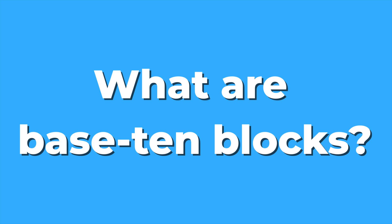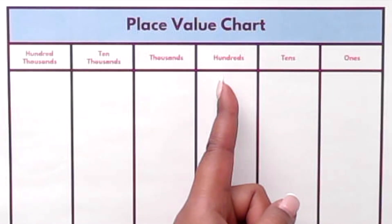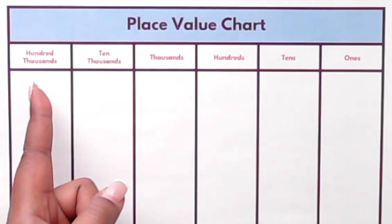Base 10 blocks are visual models that help students better understand place value. They're based on our number system, the place value system, where each place value is 10 times greater than the place before it.